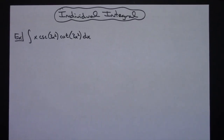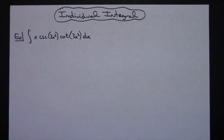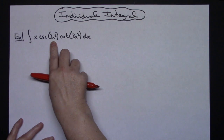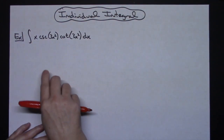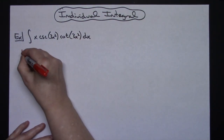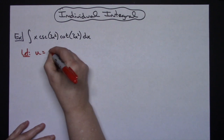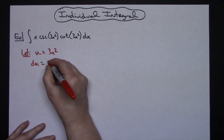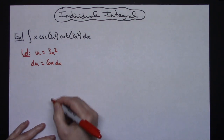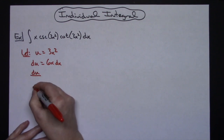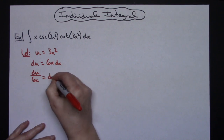In this video I'm going to work out an individual integral. It's going to be a basic u substitution integral that you would learn right after learning u substitution. We're going to integrate x cosecant of 3x squared cotangent 3x squared dx. I'm going to start by letting u equal that inside portion, 3x squared. Taking the derivative of both sides, du equals 6x dx, and solving for dx gives du over 6x.